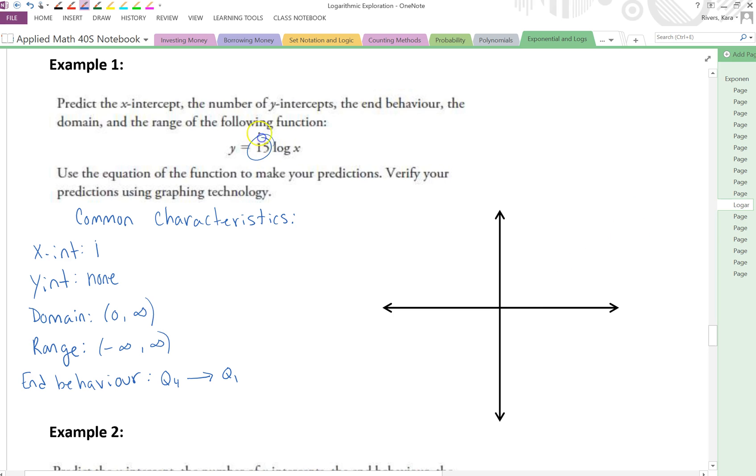Now, because this 15 is quite large, this is going to be a very steep increase. So if you want to exaggerate that a little bit, we know that the y-intercept here is 1. This is my x-axis. This is my y-axis.